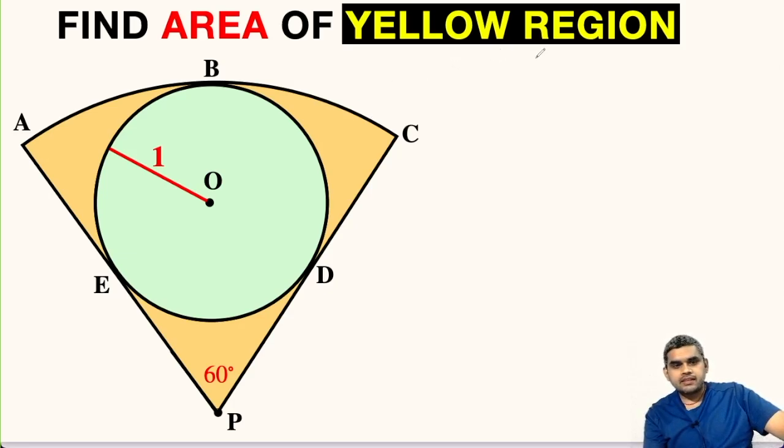In this question, we have to find the area of this yellow region. It is a sector of 60 degree central angle and inside it, we have a circle of radius 1 unit.